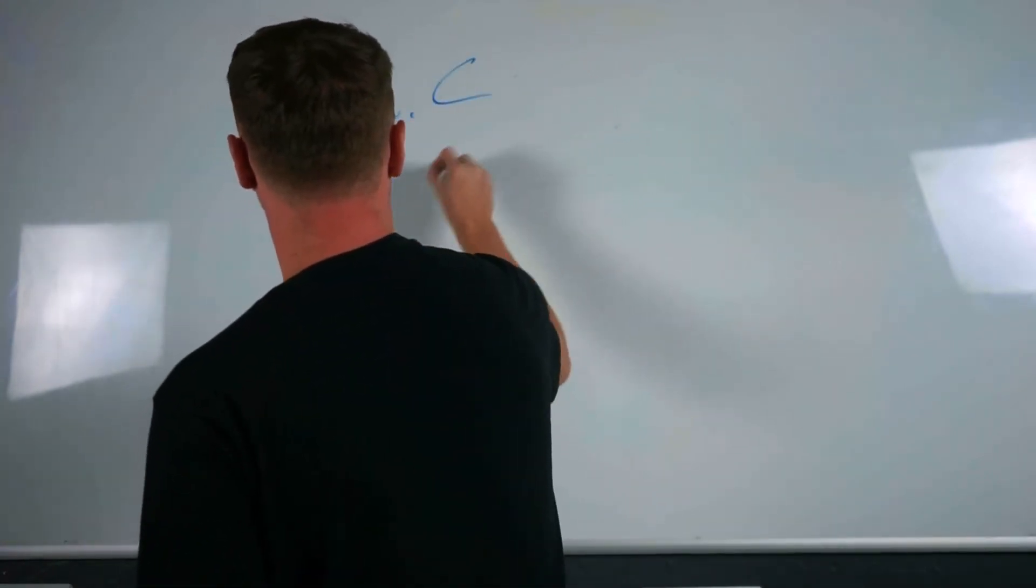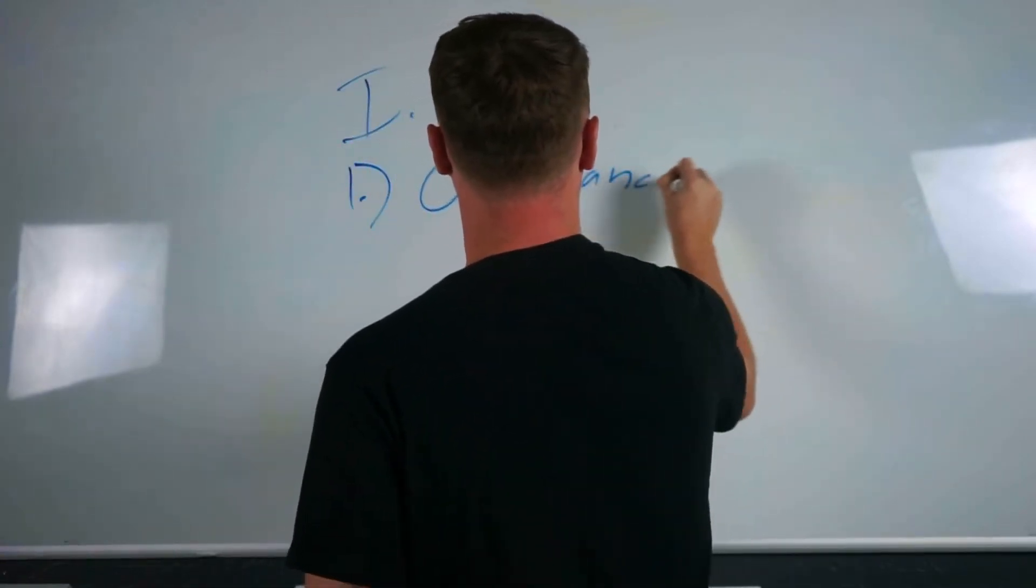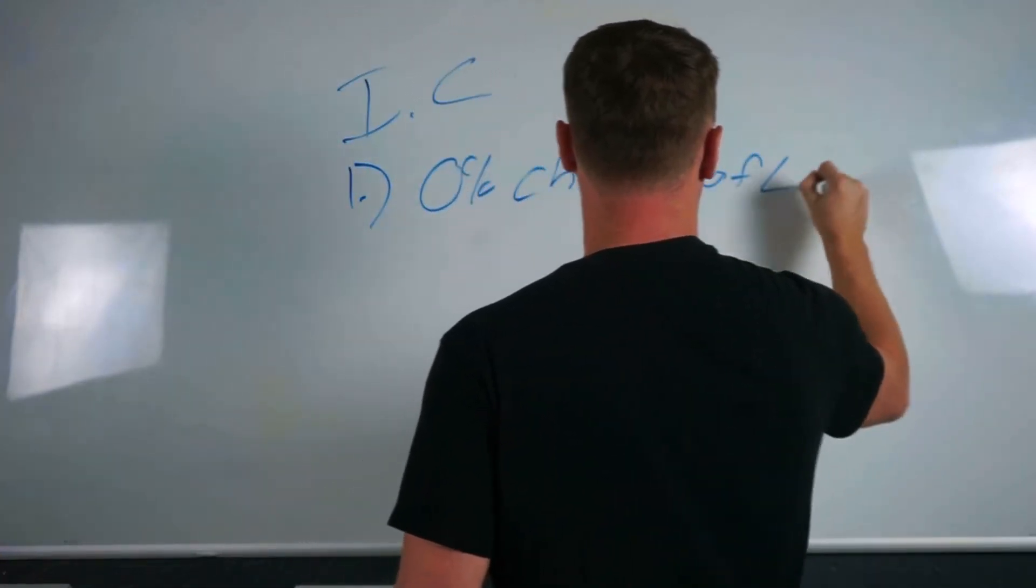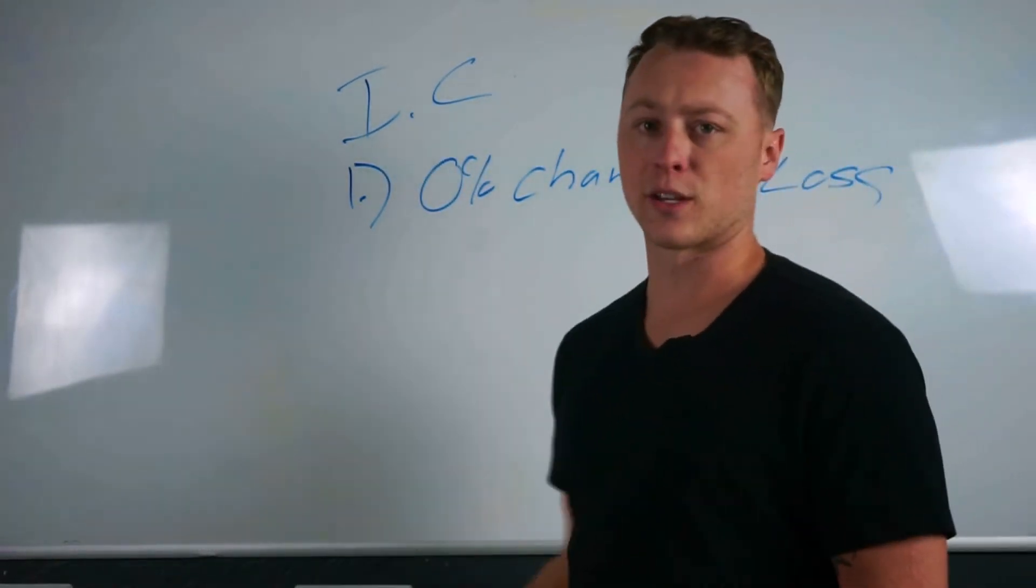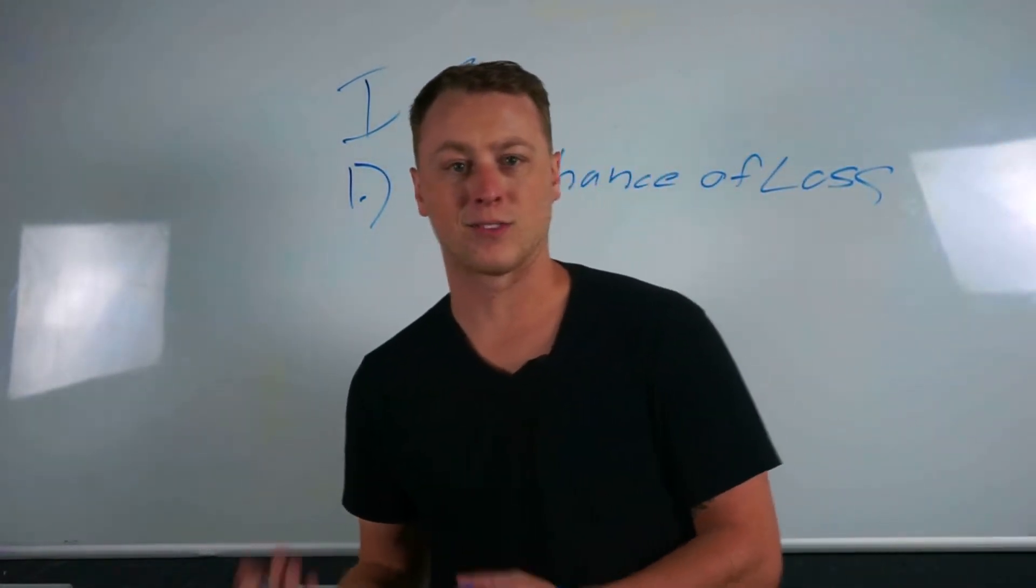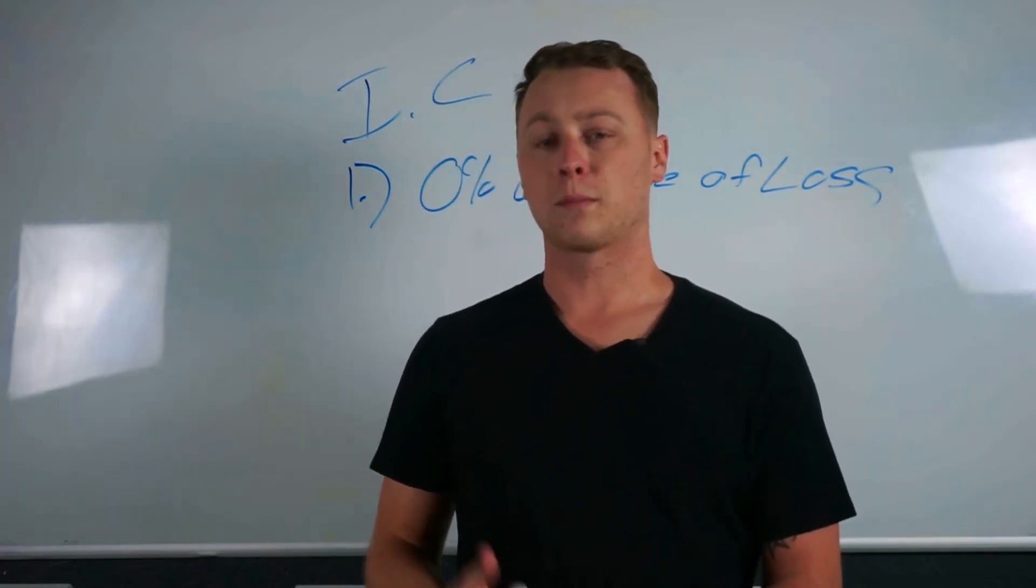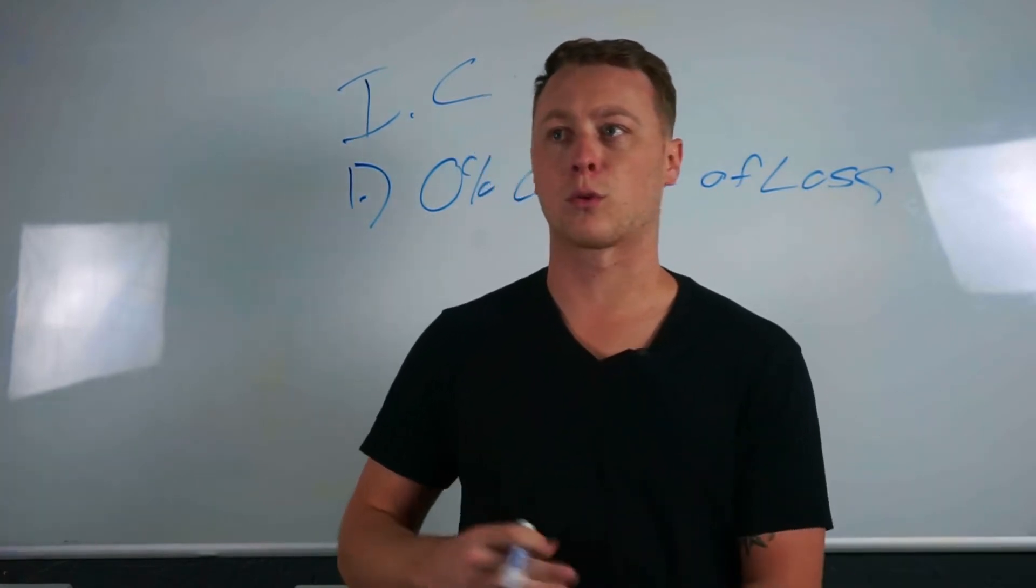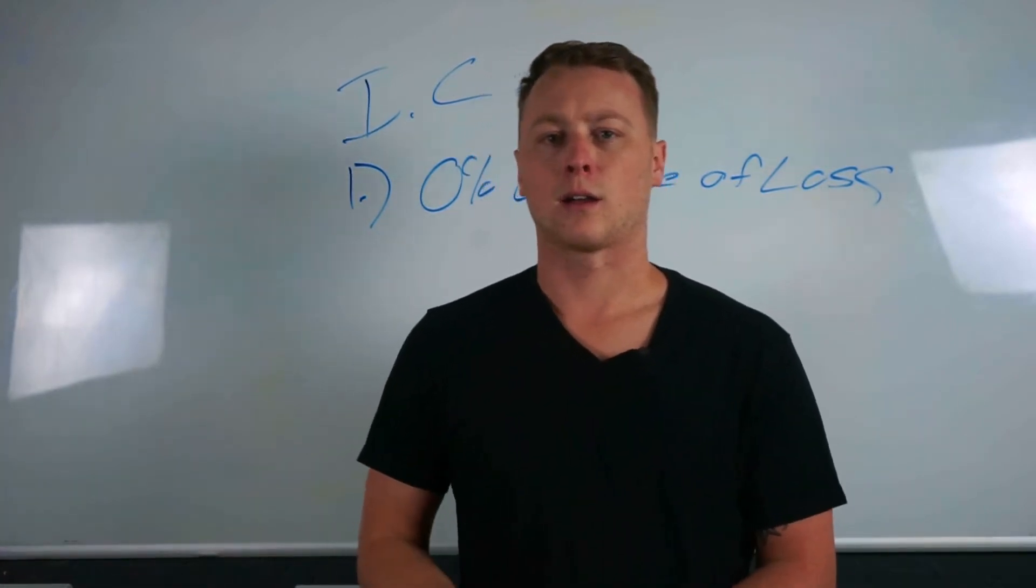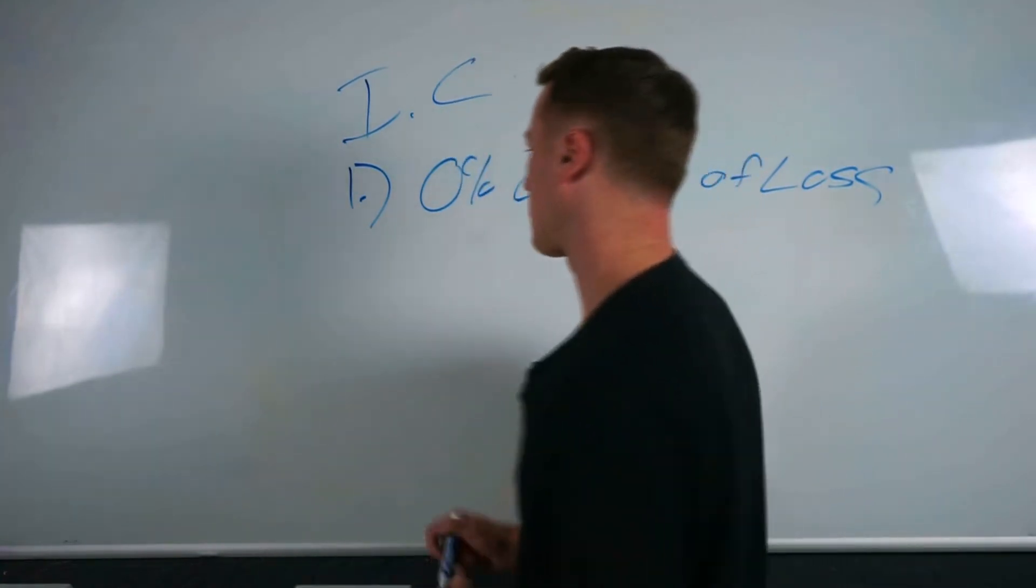So rule number one, zero percent chance of loss. You guys see that? Rule number one, zero percent chance of loss. This would eliminate probably a lot of the things you guys would put your money in. You wouldn't be playing with Bitcoin. You wouldn't be trying a Shopify store or buying some business that's making a few bucks a month. So zero percent chance of loss. That's rule number one.